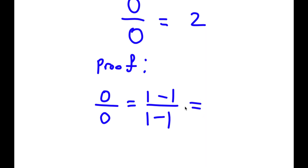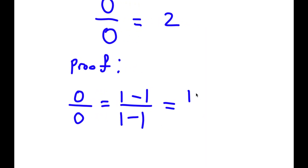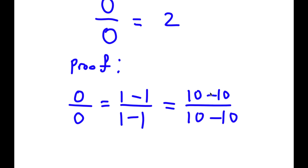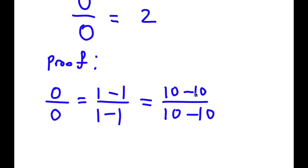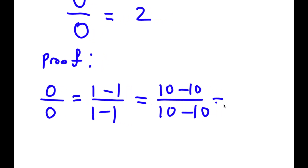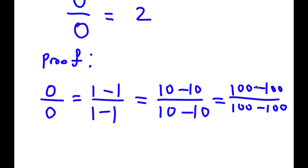Now this is the same thing as 10 minus 10 over 10 minus 10, because 10 minus 10 is again zero — so I have zero over zero still. And this is the same thing as 100 minus 100 over 100 minus 100. Again, 100 minus 100 is zero, so it's zero over zero still.